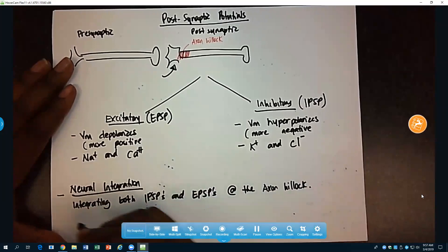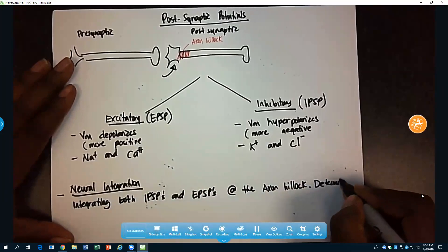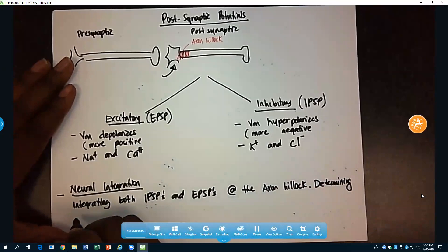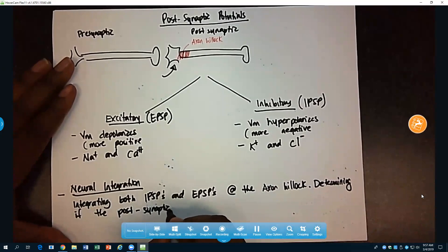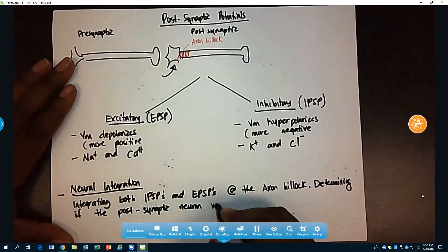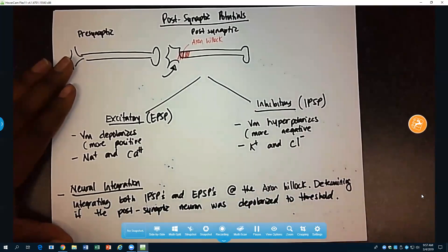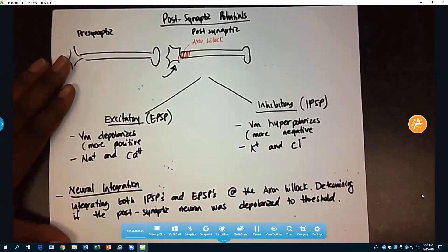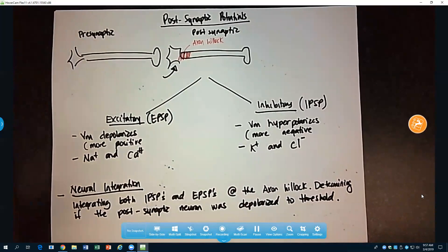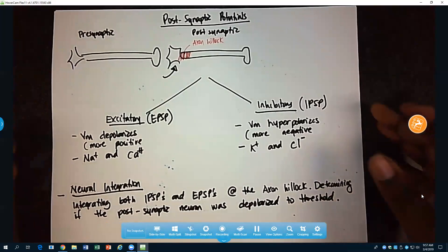Okay, and then determining if the post-synaptic neuron was depolarized to threshold. All right, so if this region of the post-synaptic neuron had a membrane potential change that exceeded negative 55 millivolts, then we fired an action potential. If it did not, we did not fire another action potential. Okay. All right, and that was neural integration.